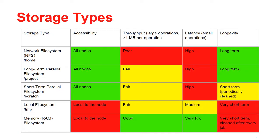Here are our different storage types. We have the network file system, which is under home. This is accessible from all nodes, and it has poor throughput and high latency. However, it is long-term. This should not be used for jobs because the performance is poor.